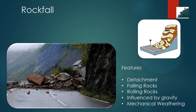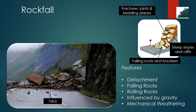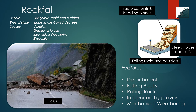Rock falls are abrupt movements of masses of geologic materials such as rocks and boulders that become detached from steep slopes or cliffs. Separation occurs along discontinuities such as fractures, joints and bedding planes, and movement occurs by free fall, bouncing and rolling. Falls are strongly influenced by gravity, mechanical weathering and the presence of interstitial water. The speed of rock falls is very to extremely rapid — they are very dangerous. The slope angle is 45 to 90 degrees, and causes include vibration, undercutting, differential weathering, excavation or stream erosion.